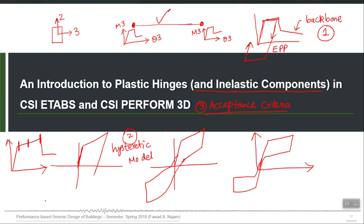This applies to any action-deformation curve — it can be a moment-rotation curve for a beam, a stress-strain curve for a material in fiber modeling, a shear force versus shear deformation curve for a shear hinge, or a torsion versus twist curve for a torsion hinge. Any action-deformation curve will also have acceptance criteria associated with it. We provide not only the complete behavior as a full curve, but also three markers that the program uses to calculate DC ratios and report performance.